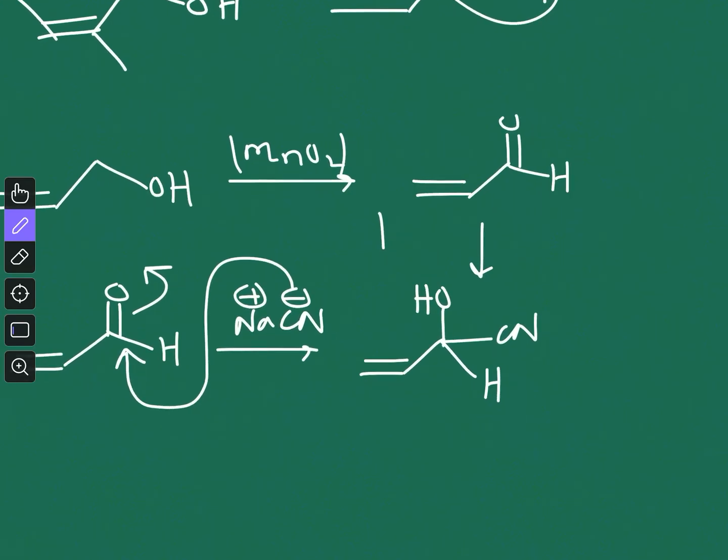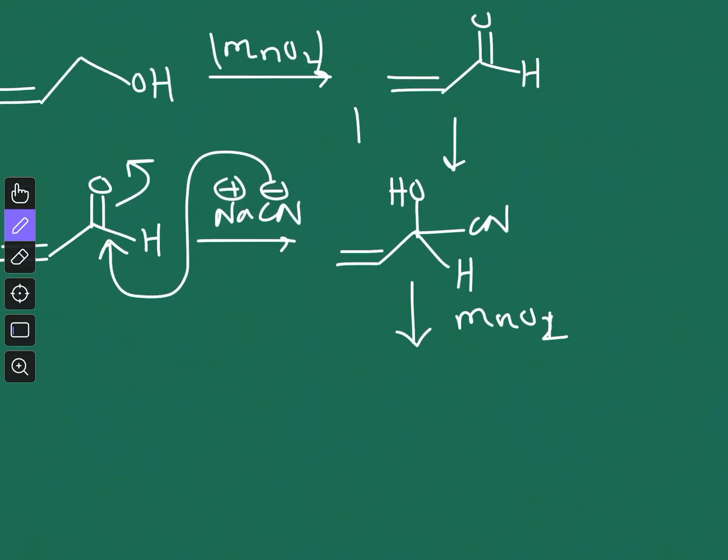Now again in this step you can see this is none other than an allylic alcohol. We regenerated an allylic alcohol and MnO2 is still there in the reaction medium. So it will again be oxidized to the keto group. In this case you will have this carbonyl species, the cyanide-containing carbonyl species.